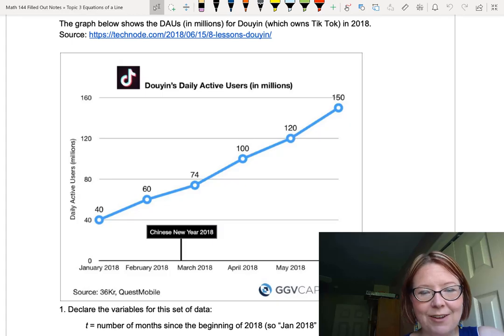On the x-axis of this graph, we have January, February, March, April, May, and June of 2018. And on the y-axis, we have the daily active users in millions of the app TikTok.